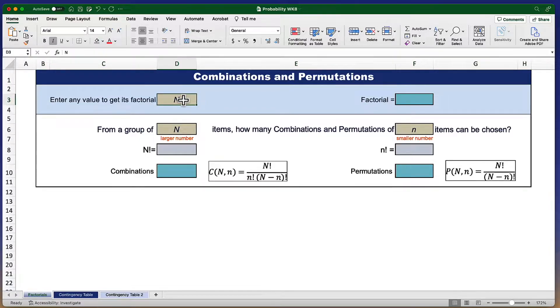A factorial of any number is that number times every lower number. So for instance, the factorial of 2 would be 2 times 1, which would be 2.